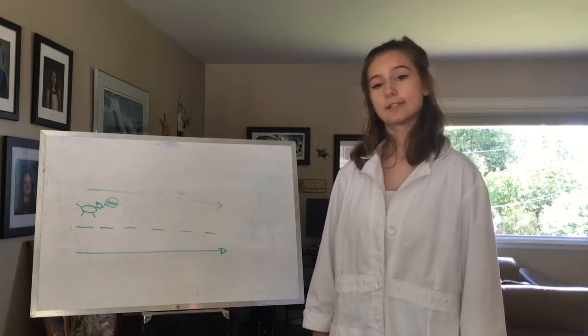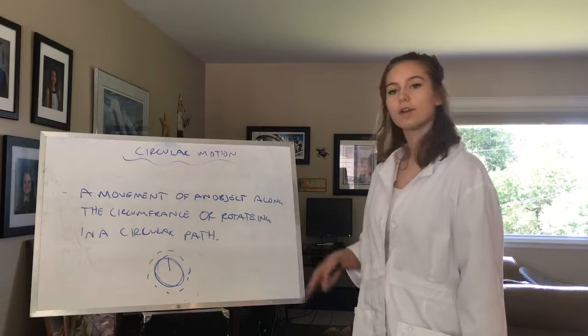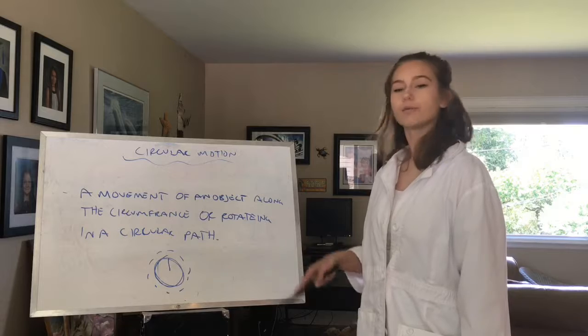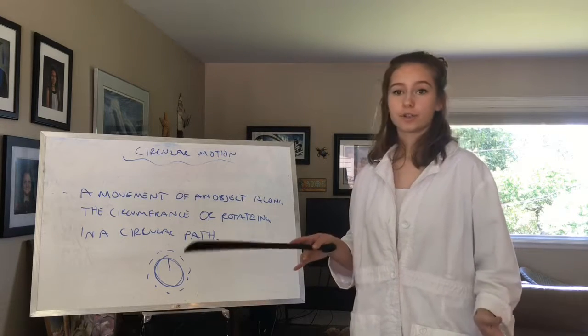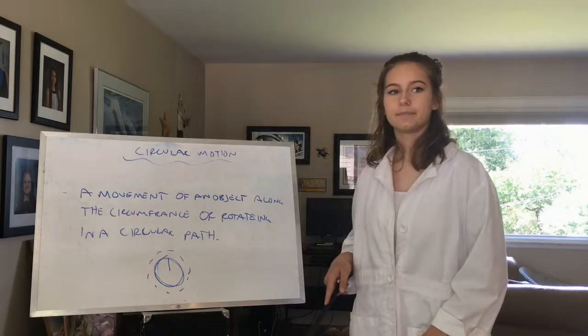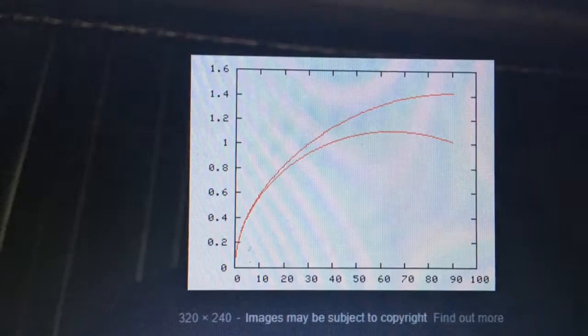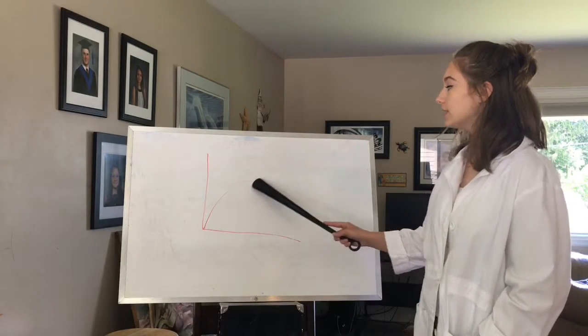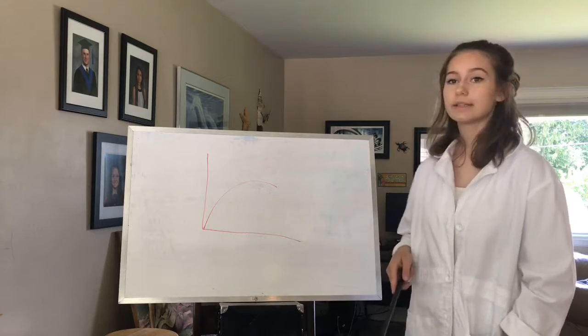Now let's take a look at circular motion. Circular motion is the movement of an object along the circumference of a circle or rotating in a circular path. The graph for circular motion looks something like this. This depicts circular motion because you can see the object accelerating and decelerating as it goes around in a circle.